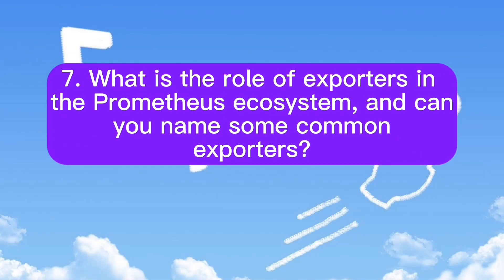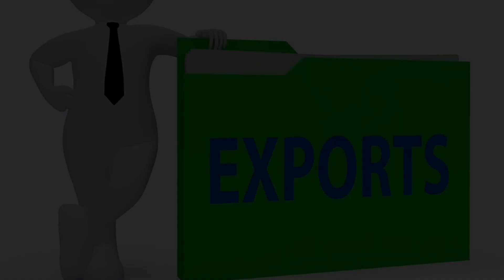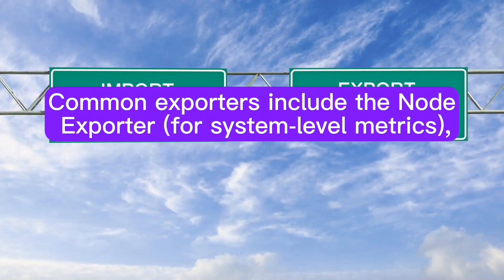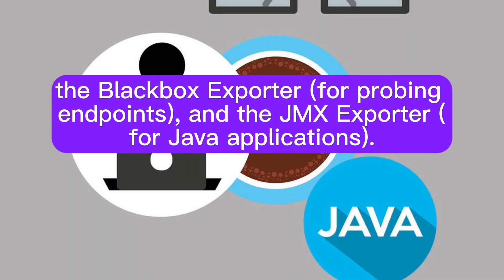What is the role of exporters in the Prometheus ecosystem? And can you name some common exporters? Exporters in Prometheus are software components that collect and expose metrics from various systems and services. Common exporters include the node exporter for system-level metrics, the black box exporter for probing endpoints, and the JMX exporter for Java applications.